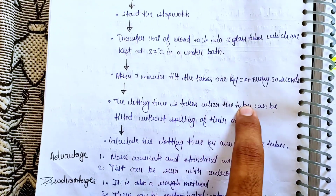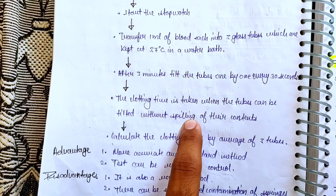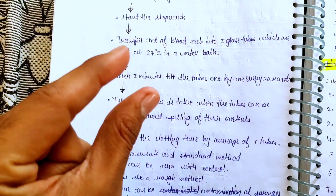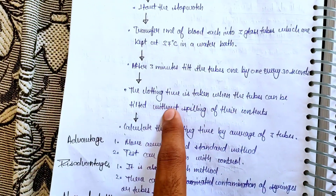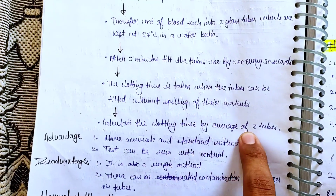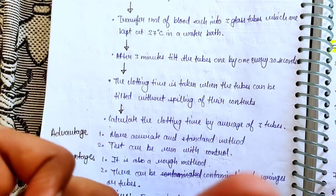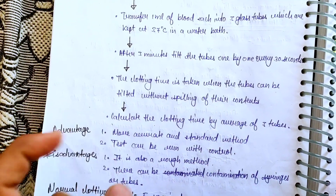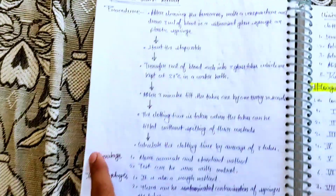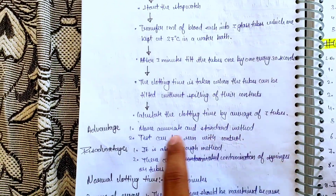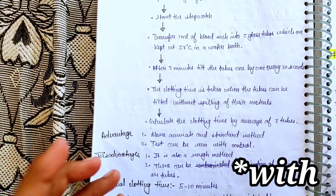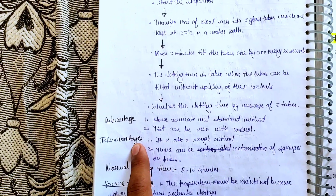The clotting time is noted when the tubes can be tilted without spilling their contents. Calculate the clotting time by taking the average of all 3 tubes. The advantage of the Lee and White Method is that it is a more accurate and standard method, and the test can be run without a control.